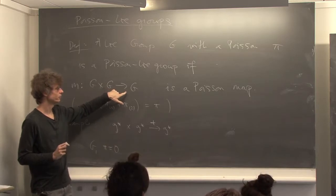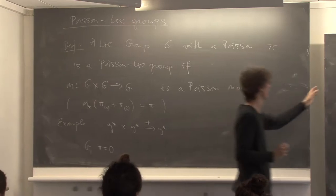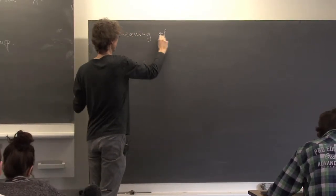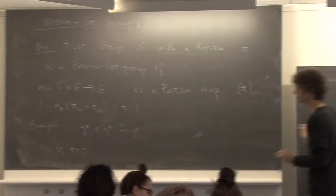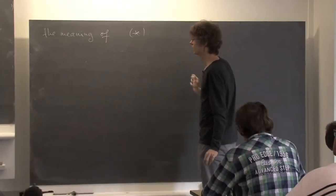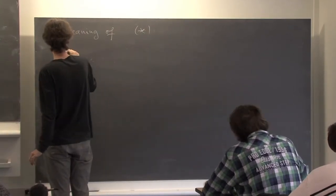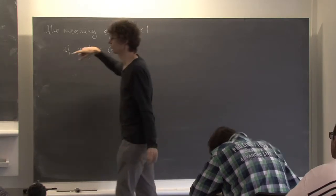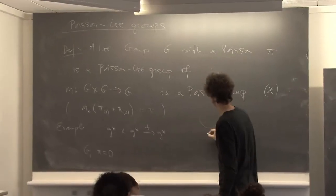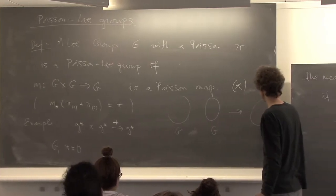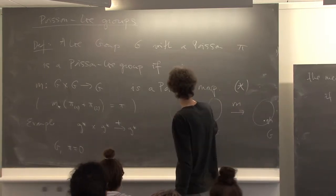Examples: the trivial group; the dual of a Lie algebra g* which is naturally a Poisson manifold, with addition as group law — as shown in exercises, the linear Poisson structure makes addition a Poisson map; any group G with zero Poisson structure, which is silly but valid.